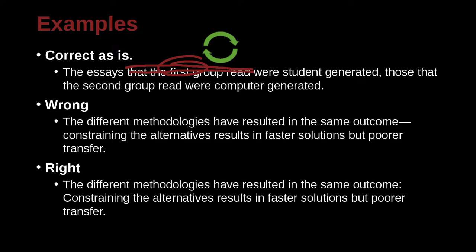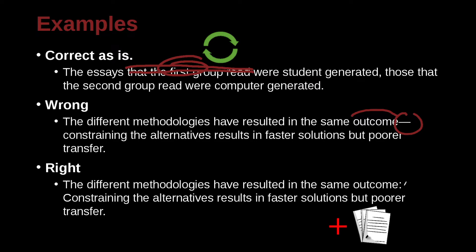The different methodologies have resulted in the same outcome. Constraining the alternatives results in faster solutions but poor transfer. Here we have the example of a dash. A dash will explain this last bit or change the tone in the sentence. But in this case, we're adding information to make it more clear, and in fact we have two independent sentences. If you have two independent sentences and you're just trying to put them together, remember you can use the colon with the capital. I would suggest you just keep them as separate sentences — it's the easiest way to take care of that.